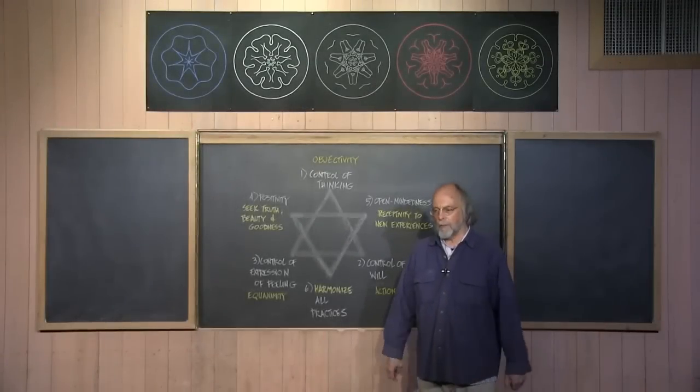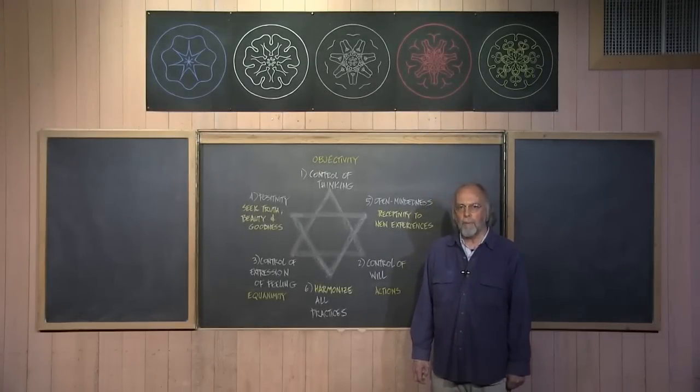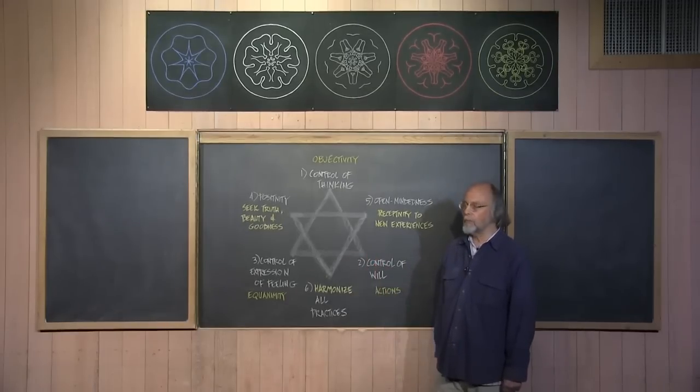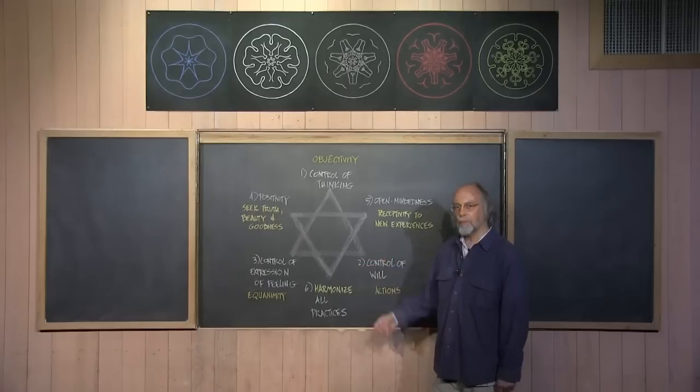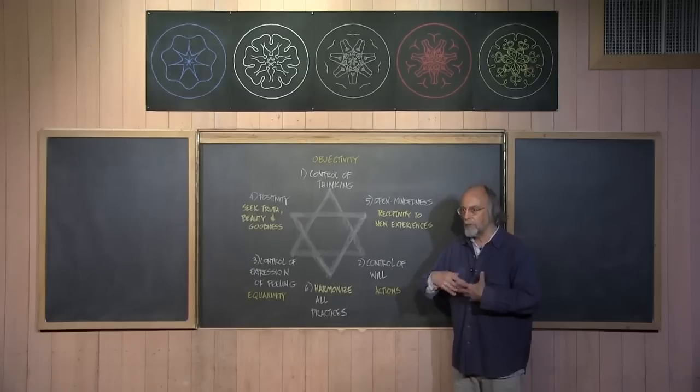Hello, my name is Brian Gray. I direct the Foundation Program in Anthroposophy at Rudolf Steiner College. In this session we're going to look at what Rudolf Steiner called the six essential exercises or the six basic exercises, which are exercises that a human being freely takes up if they want to develop themselves.